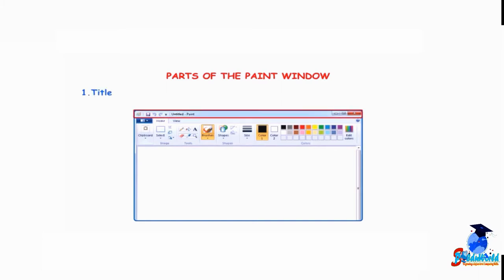Number 1: Title Bar. The blue bar at the top of the screen is known as the title bar. It displays the program name and the file name.